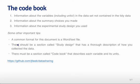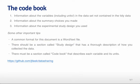A common format for the code book document is a Word or text file, maybe a markdown file - markdown files are a commonly used format in data science. There should definitely be a section called 'study design' that has a thorough description of how you collected the data, including things like how you picked which observations to collect, what you extracted out of the database, and what you excluded. There also should be a section called 'codebook' that describes all of the variables and their units.